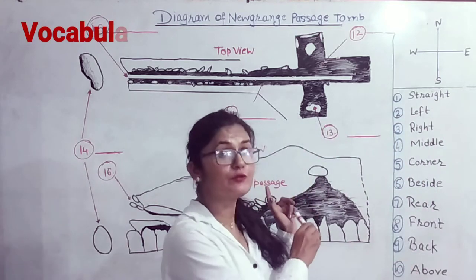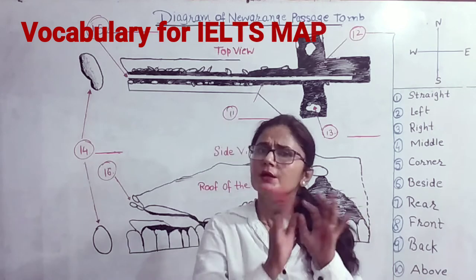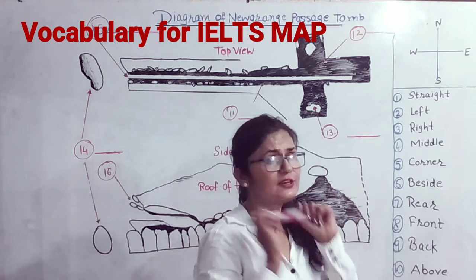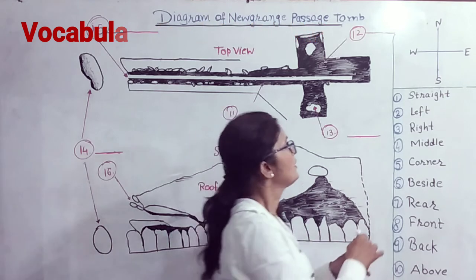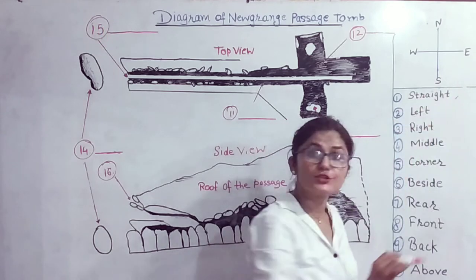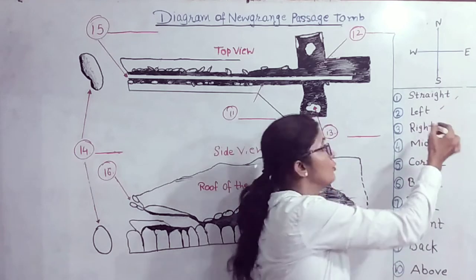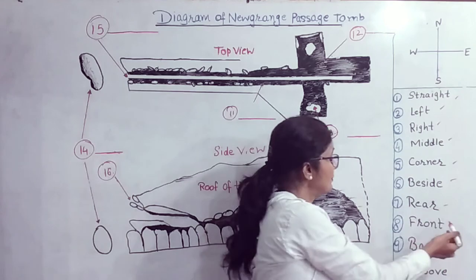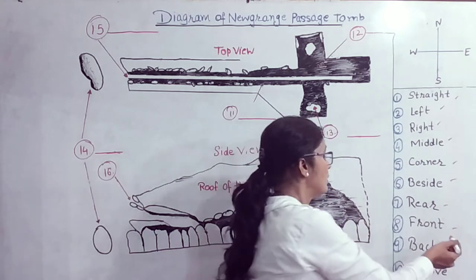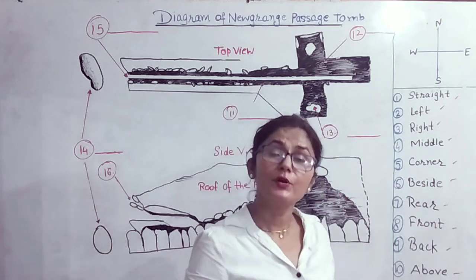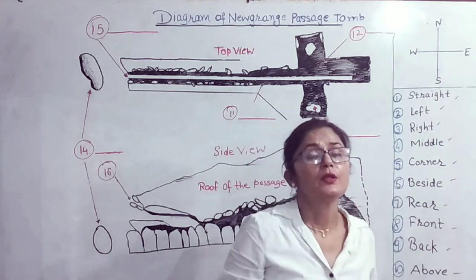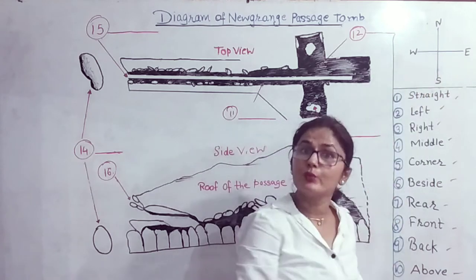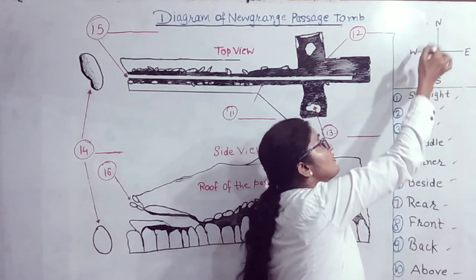Before starting the listening track for this map or labeling diagram, I'd like to give you some vocabulary that is really necessary for solving labeling diagrams or maps — not only in listening but in reading too. The speaker may say: go straight, move left, move right, middle, center, corners, beside, side, rear, front, back, above, below, opposite, between. The speaker can also use directions like north, south, east, west, northeast, southeast, southwest.